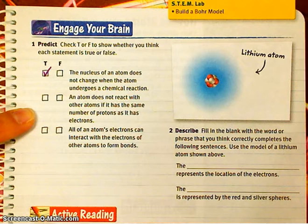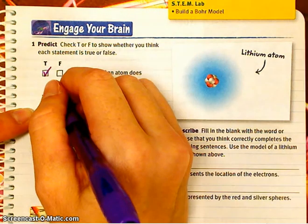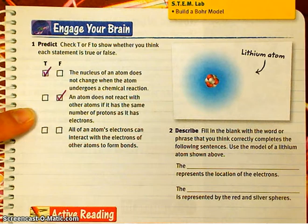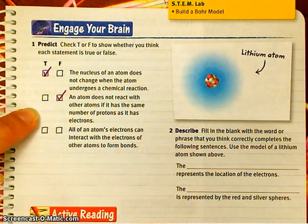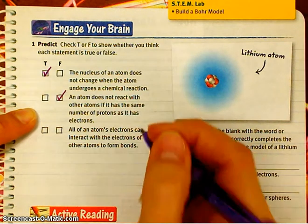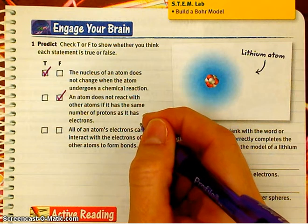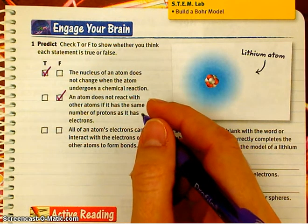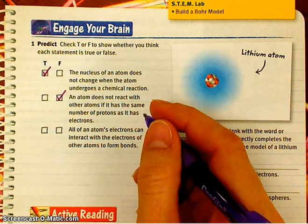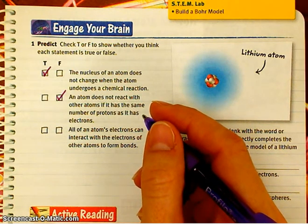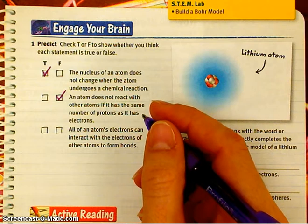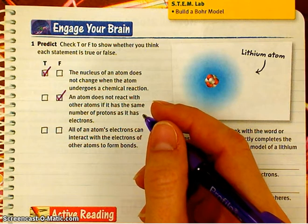Second one: an atom does not react with other atoms if it has the same number of protons as it has electrons. That is false. What's going to determine whether it reacts or not? The number of electrons — specifically whether we have a full outer shell of electrons, a full number of valence electrons or not. Remember that the first shell was full at two, the second shell was full at eight, and the third shell was full at eight. So atoms are going to react if they do not have a full outer shell of electrons.